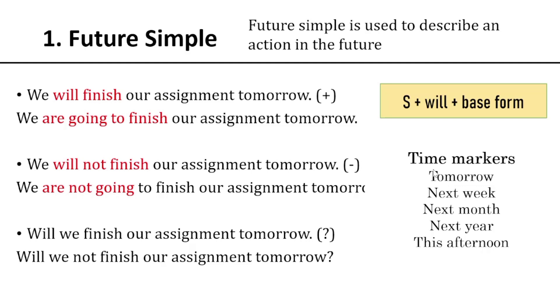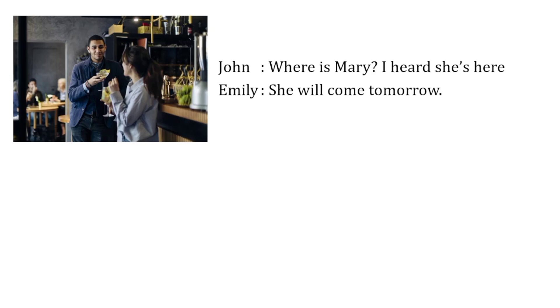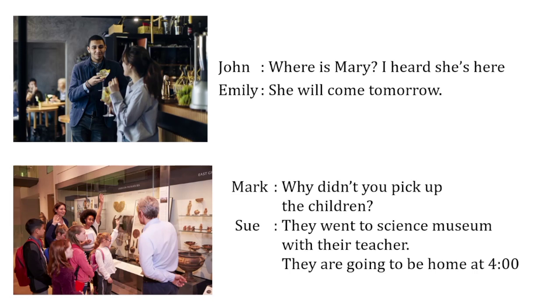These are the time markers for future simple: tomorrow, next week, next month, next year, or this afternoon. Let's look at future simple in conversations. 'Where's Mary?' 'I heard she's here.' 'She'll come tomorrow.' — Emily uses 'will' and 'tomorrow' here. Second conversation: 'Mark, why didn't you pick up the children?' 'They went to the science museum with their teacher. They're going to be home at four.' Here we use 'going to be home' with the time marker 'at four.'